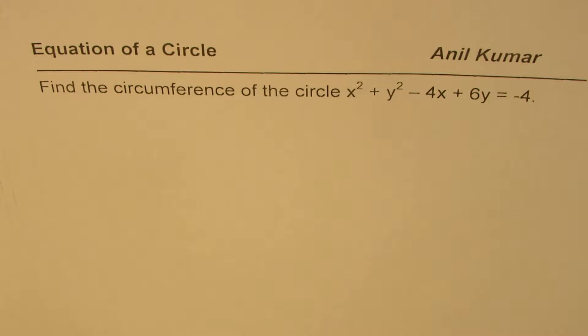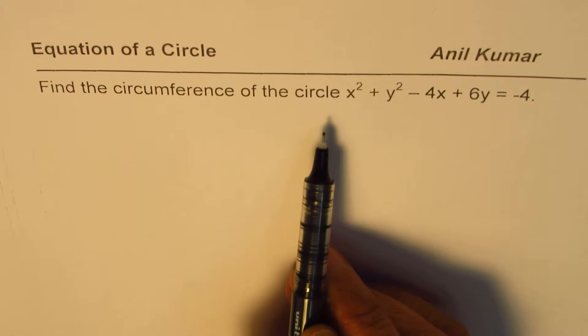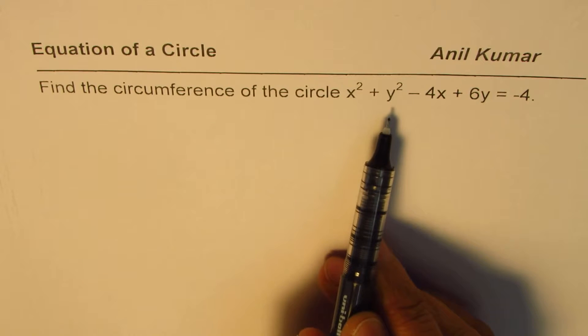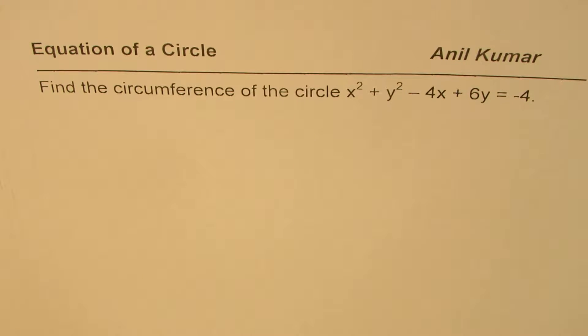I'm Anil Kumar sharing with you questions on circle which may help you perform better in your test. This question is also relevant for students who are taking up SAT these days. The question here is find the circumference of the circle x square plus y square minus 4x plus 6y equals minus 4.